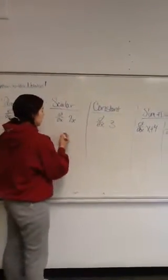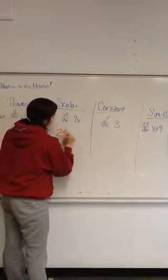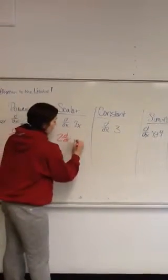Now we're going over to scalar. Scalar is nice and easy. You take your 2x and you always bring out your scalar and put it in front of your d/dx, and you leave your x there.